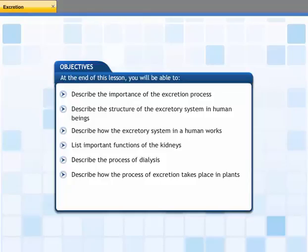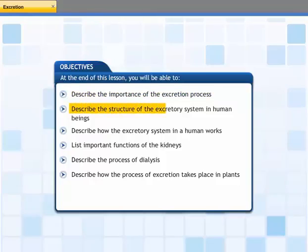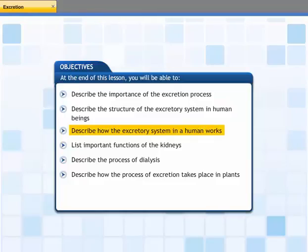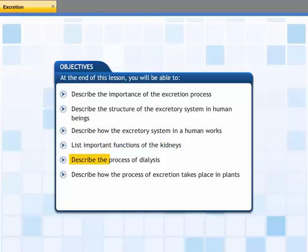At the end of this lesson, you will be able to describe the importance of the excretion process, describe the structure of the excretory system in human beings, describe how the excretory system in a human works, list important functions of the kidneys, describe the process of dialysis, and describe how the process of excretion takes place in plants.